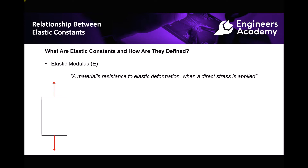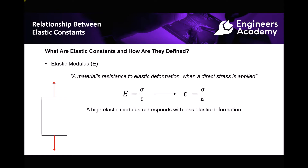Firstly we have the elastic modulus. What we're referring to here is a material's resistance to elastic deformation when a direct stress is applied. There's a small diagram in the left hand corner showing what we mean by a direct stress or direct loading — it's basically when either a tensile or a compressive force is being applied to a piece of material. When we refer to elastic deformation, we're referring to reversible deformation. The common equation is: elastic modulus E equals stress over strain, where stress is the force divided by the cross sectional area, and strain is the change in length divided by the original length.